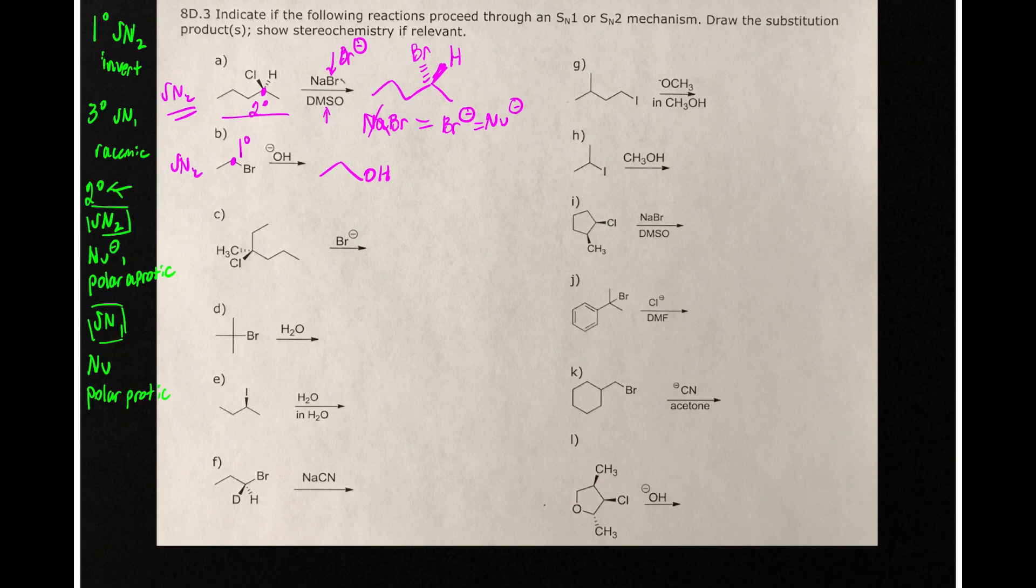In this case here, we have a tertiary. So here's the alpha. It's kind of hard to count here, but there's one, two, three carbons attached. So therefore, it must be an SN1 reaction, which gives us racemic reaction products. So we draw two molecules here. One where the chlorine is replaced for a bromine, and the other molecule with that situation reversed.